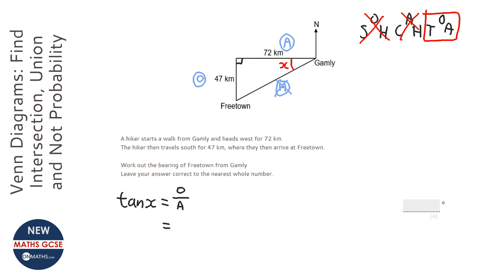So TOA stands for tan x equals opposite over adjacent, and the opposite is 47, and the adjacent is 72.